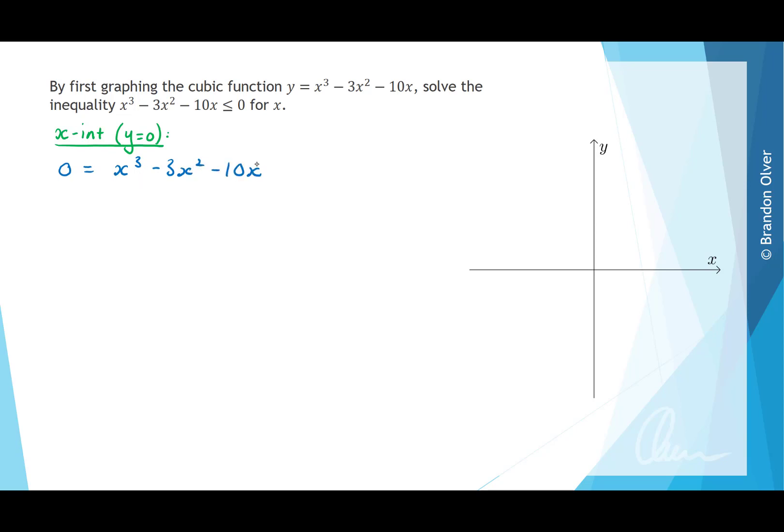And when we solve a cubic, what we want to do is factorize it. So we have 0 equals, and x is a highest common factor, and what would be left over would be x² minus 3x minus 10.